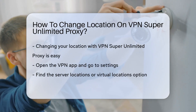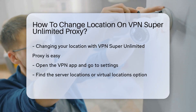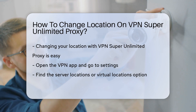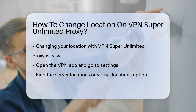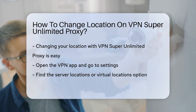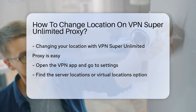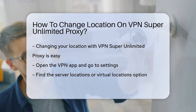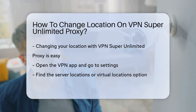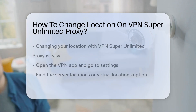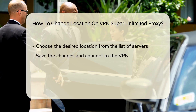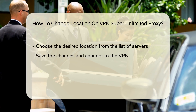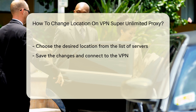To modify your location, open the VPN app and navigate to the Settings menu. Look for the option related to server locations or virtual locations. Select the desired location from the available list of servers.